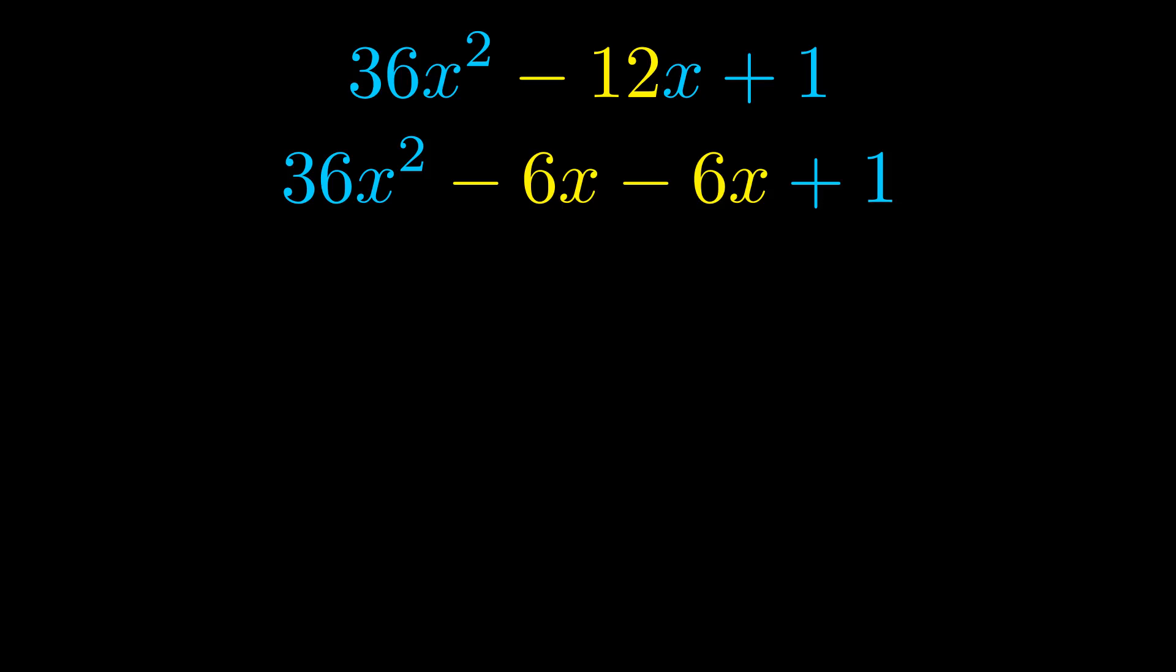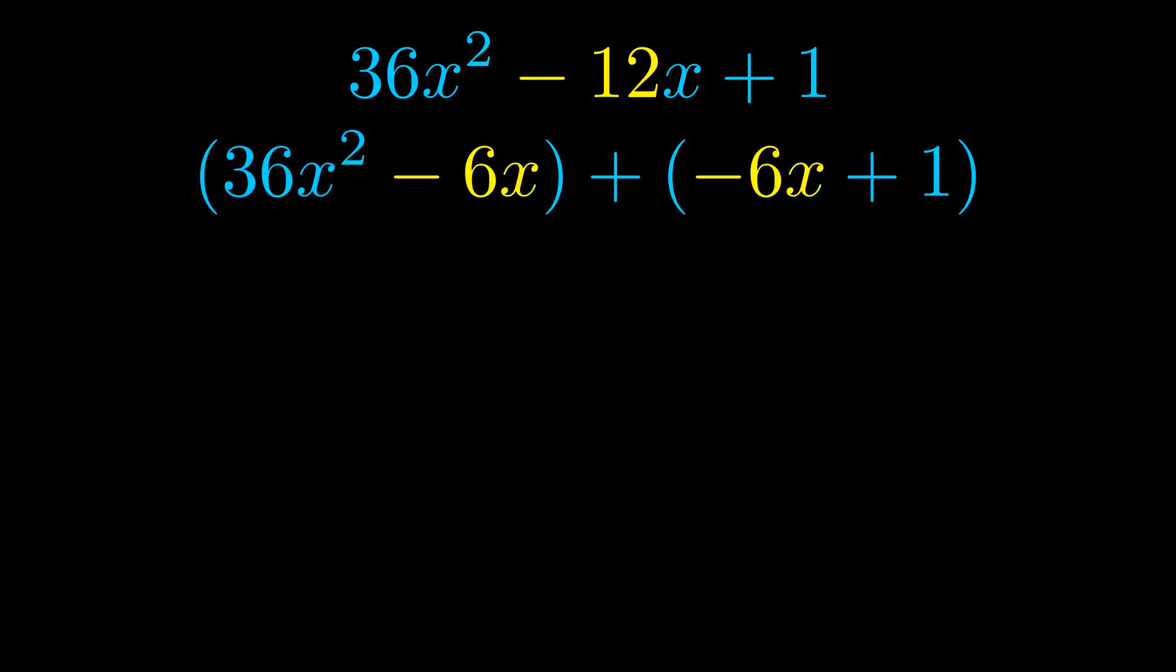Once we've done this, we go ahead and put parentheses around the first term and the last term. And we do that so that we can take the greatest common factor out of both terms. We can see the greatest common factor is now outside in green. Notice also how what remains inside of the parentheses is the same in both cases.